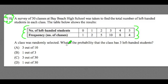A class was randomly selected. What is the probability the class has three left-handed students? And then we have options: three out of ten, one out of three, three out of thirty, one out of thirty. Take a moment to digest this problem.